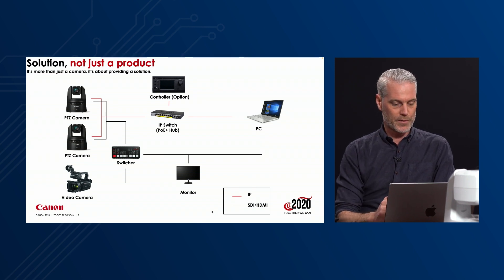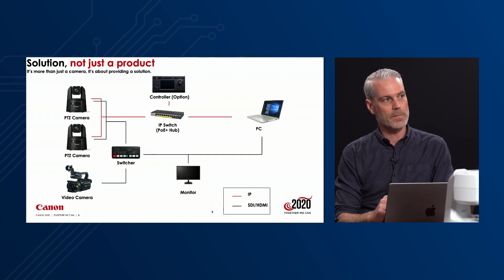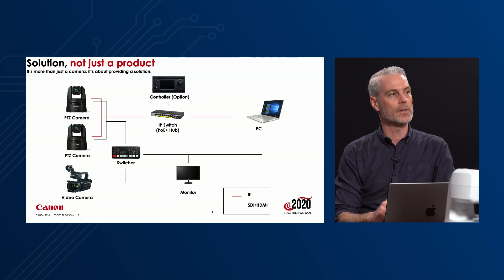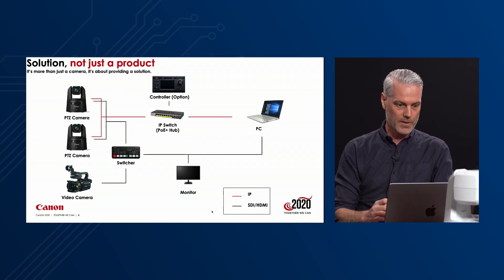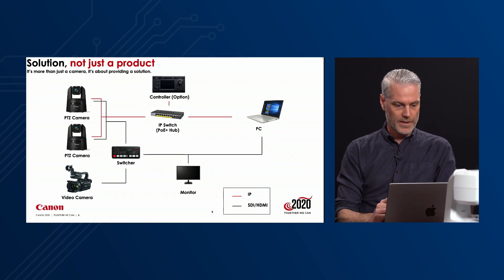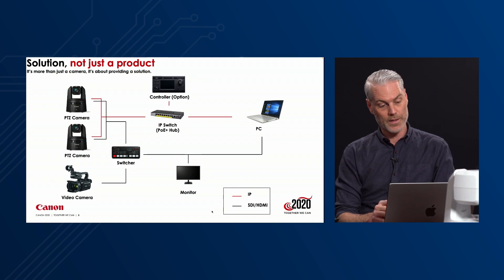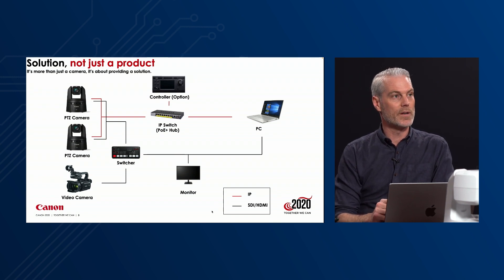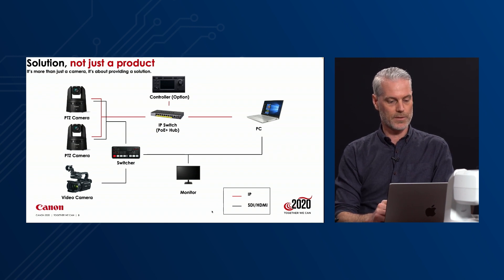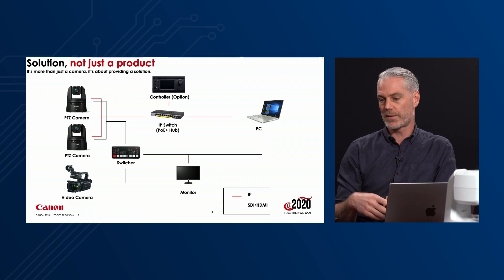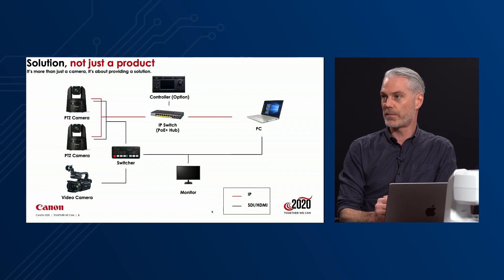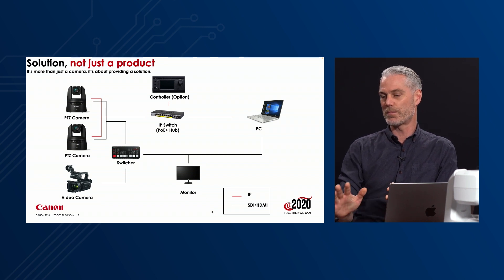To make this solution work, we need a few pieces of equipment. We have cameras on the left and some kind of switcher. We need a network switch — the cameras are powered over Ethernet and it needs to be PoE Plus; regular PoE isn't enough. Then we need some kind of controller — it can be a hardware controller, or for this seminar we'll talk about the awesome blue products from Skarhoy. It's also possible to control the cameras via PC software, and you need a monitoring device.